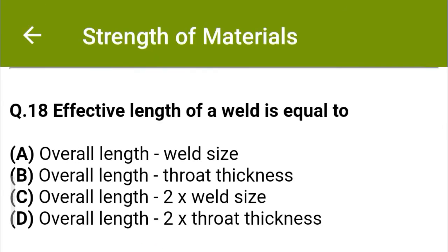Next question: The effective length of a weld is equal to — option A: overall length minus weld size, option B: overall length minus throat thickness, option C: overall length minus 2 × weld size, option D: overall length minus 2 × throat thickness. The correct answer is option C: overall length minus 2 × weld size.